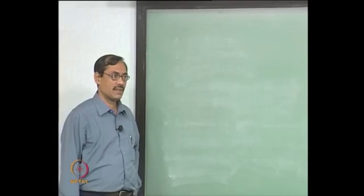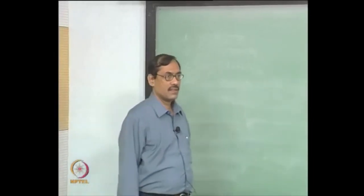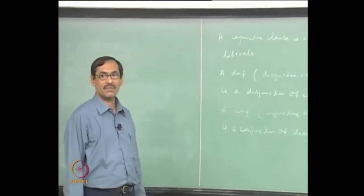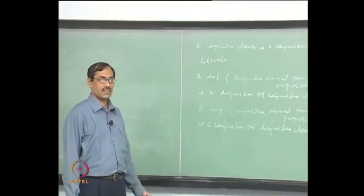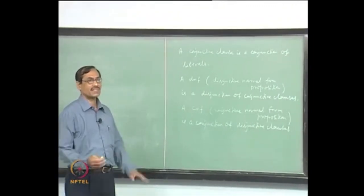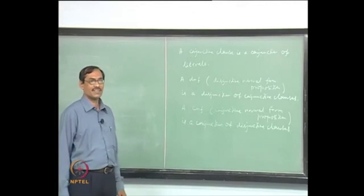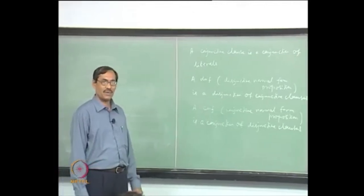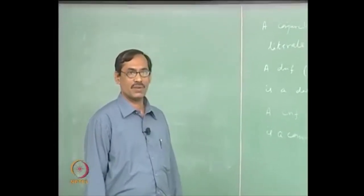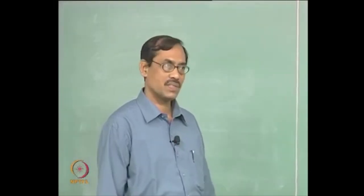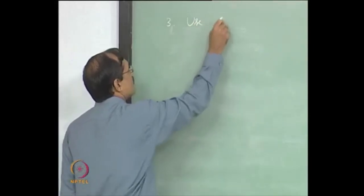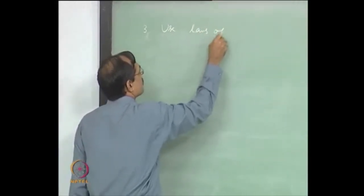What we have done so far also has a name — it is called Negation Normal Form (NNF), where negations are only on propositional variables, but ANDs and ORs can be anywhere. We want a more specific form: ANDs of ORs or ORs of ANDs. To achieve this, the third step is to use the laws of distributivity.